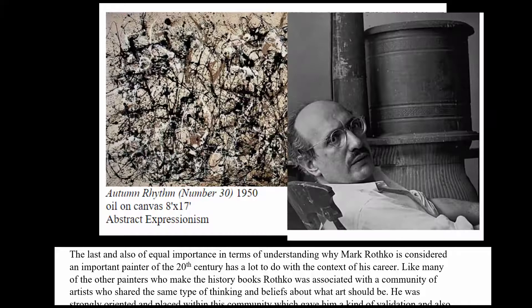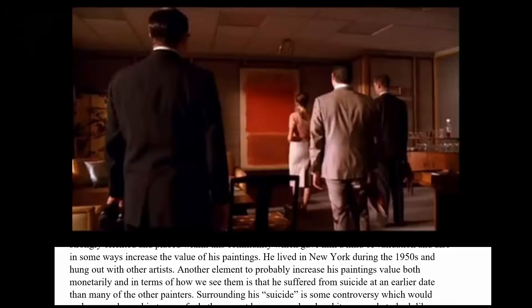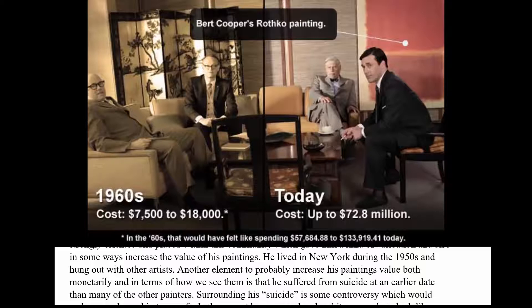Let's take a look at the context of Rothko's career. Many of the painters who made the history books like Rothko hung out in New York in the 1950s in this community and had the same type of thinking and beliefs as Rothko did. One element that helped make him famous and increased the monetary value of his paintings was that he died young in 1970.